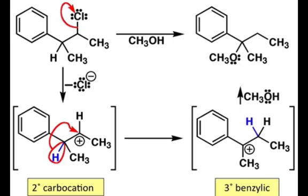We have definitely gone downhill to form a more stable intermediate, and that's the reason why this rearrangement occurred. So now ask yourself: is this tertiary benzylic carbocation the most stable it can be? Can we create a more stable carbocation with a 1-2-R shift? In this case, no, we cannot. So therefore, we move on with what we still have in our mechanism.